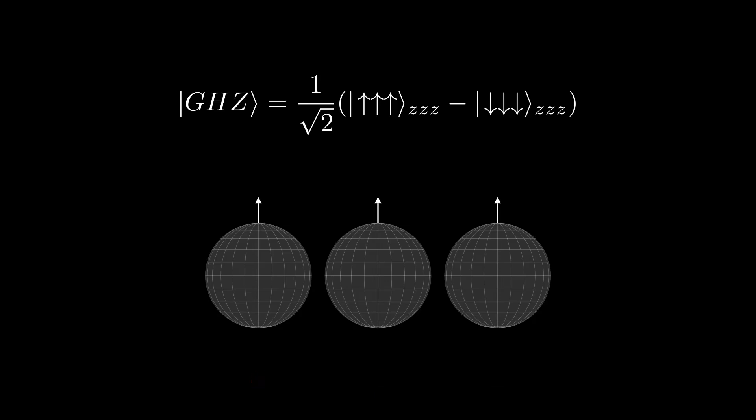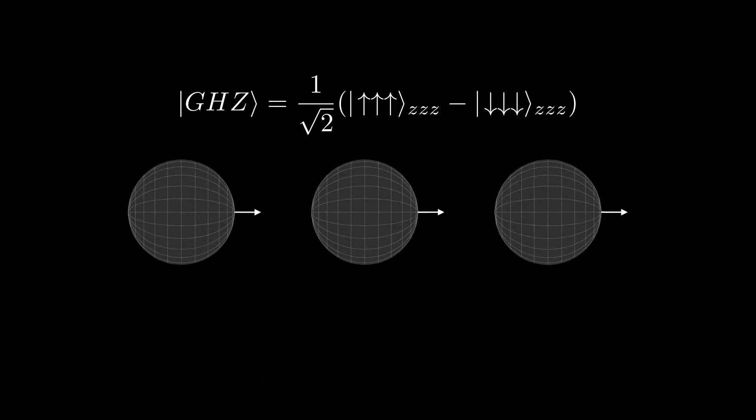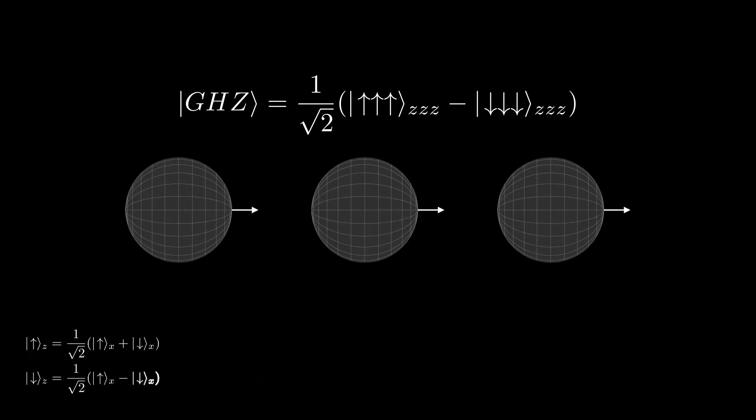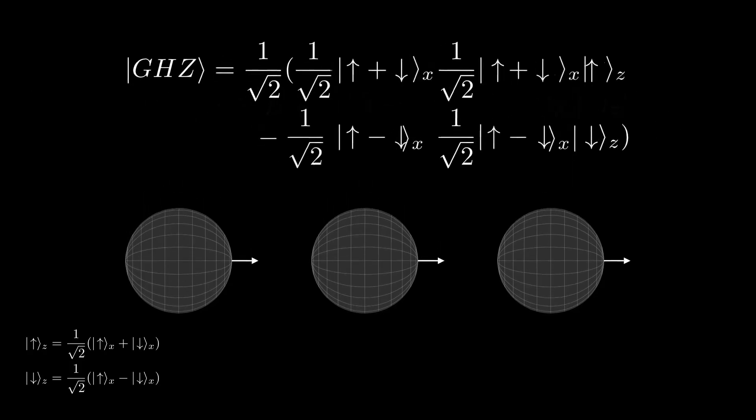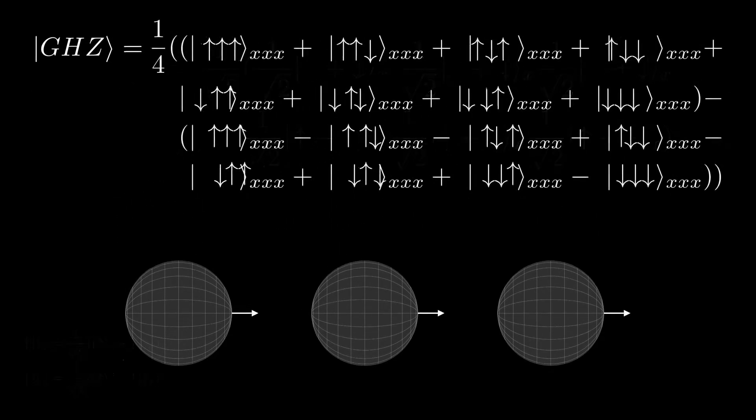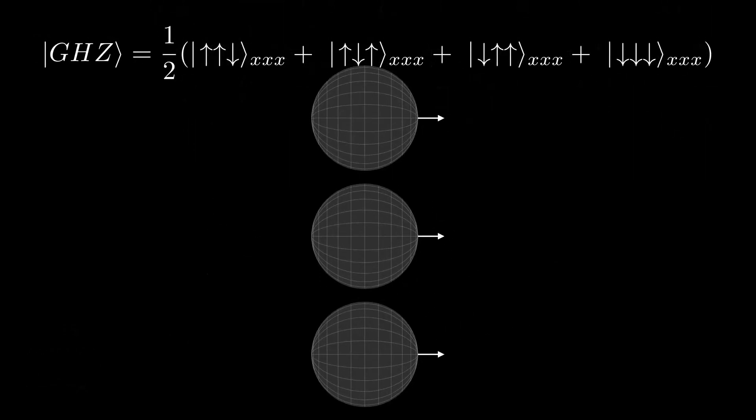But now let's consider what happens if the three detectors are all oriented in the X direction. We found out how to write up Z and down Z in terms of the Xs, so now we can just plug in, multiply out, combine like terms, cancel, and see how the state behaves in the XXX orientation.